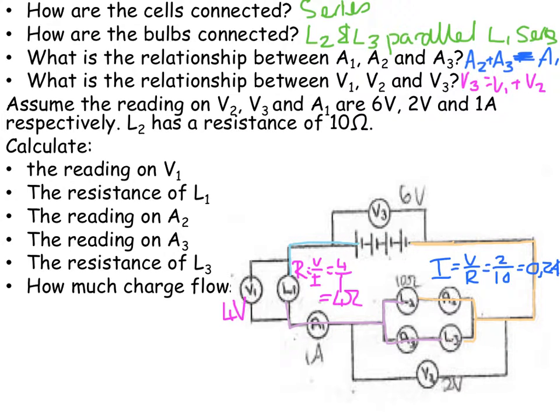What is the reading on A3? I now know that I've got 1 amp coming along here, and it's going to split. 0.2 amps is going to go to the top branch, which means that 0.8 amps is going to need to go to the bottom branch.